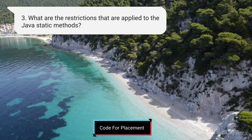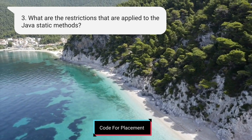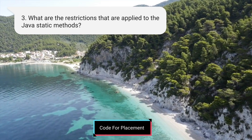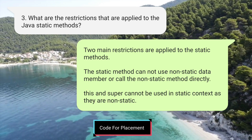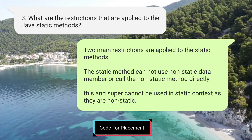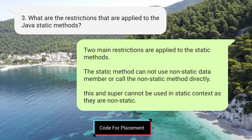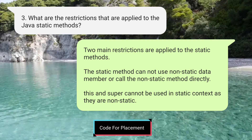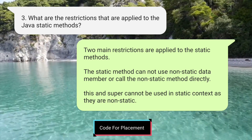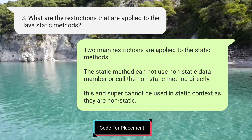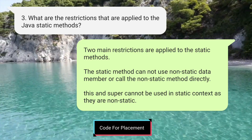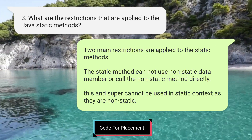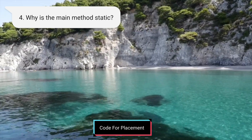The third question is: what are the restrictions applied to the Java static method? There are two main restrictions. First, a static method cannot use non-static data members. Second, the 'this' and 'super' keywords cannot be used in a static context, as they are non-static.